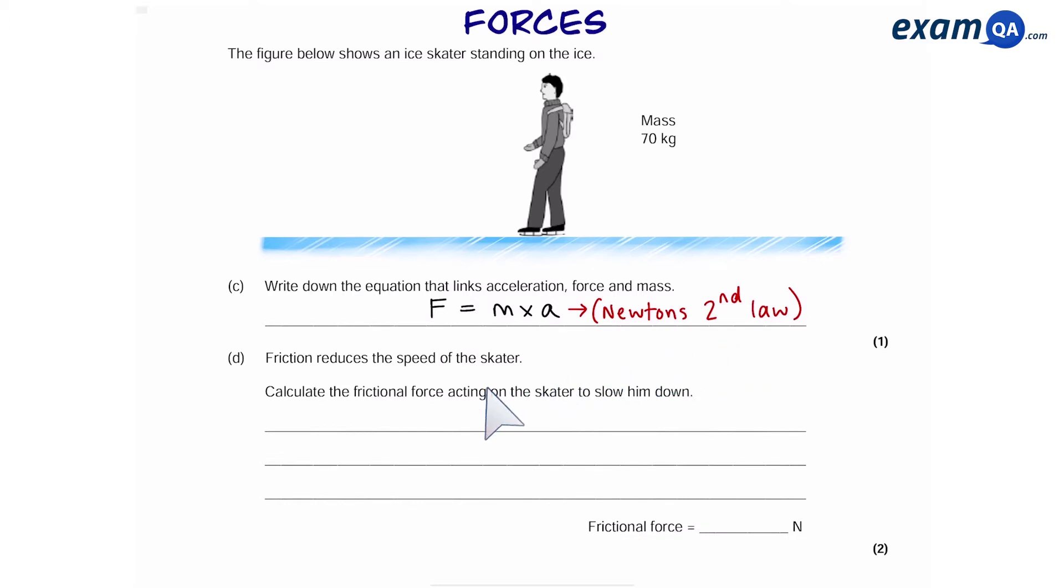Part D, work out the frictional forces acting on this skater to slow him down. So in other words, we want to find out force. That means we need to know mass and acceleration. We've been given the mass already, it's 70 kilograms.